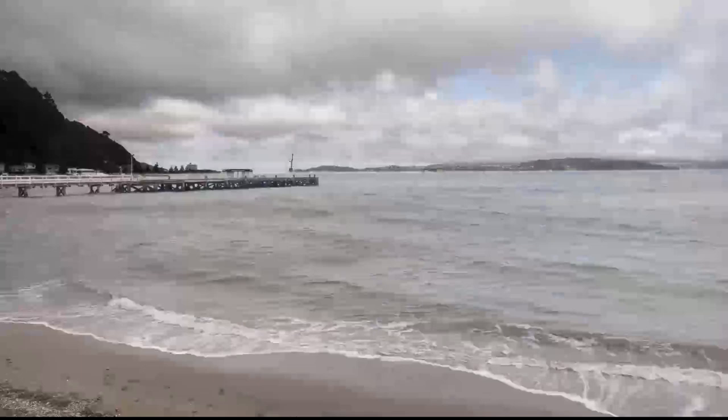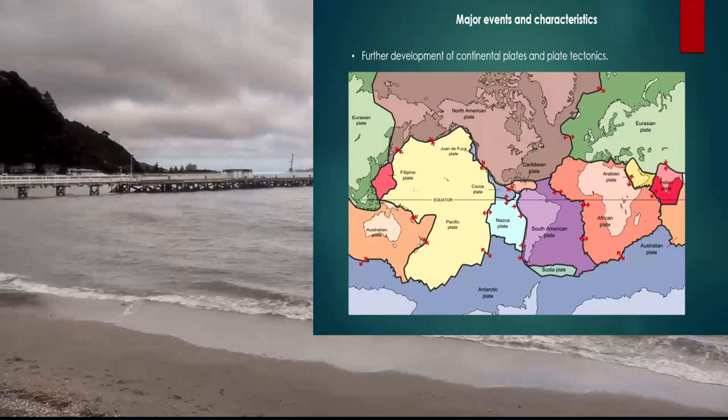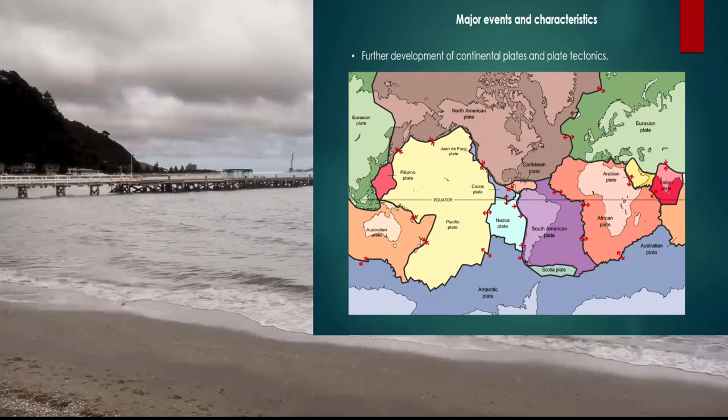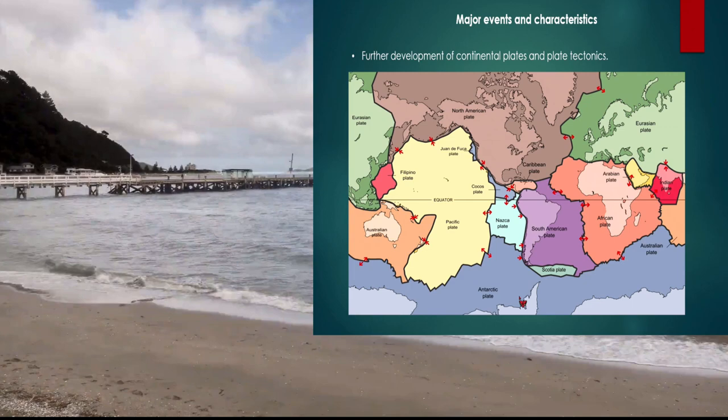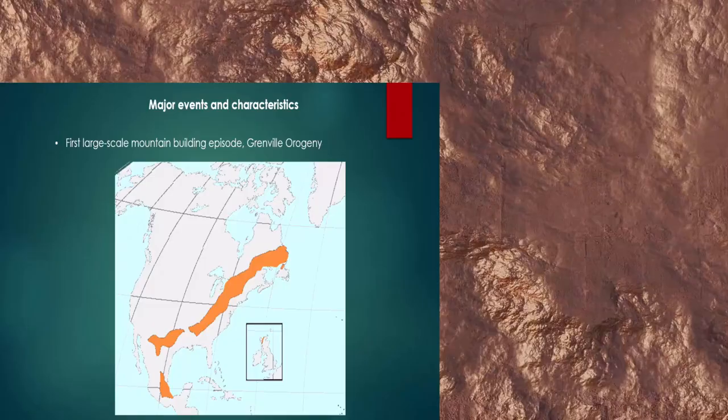Further development of continental plates and plate tectonics emerge. Here are the current plate tectonics of modern day Earth labeled in different areas with color and the black lines. These are the plate tectonics.